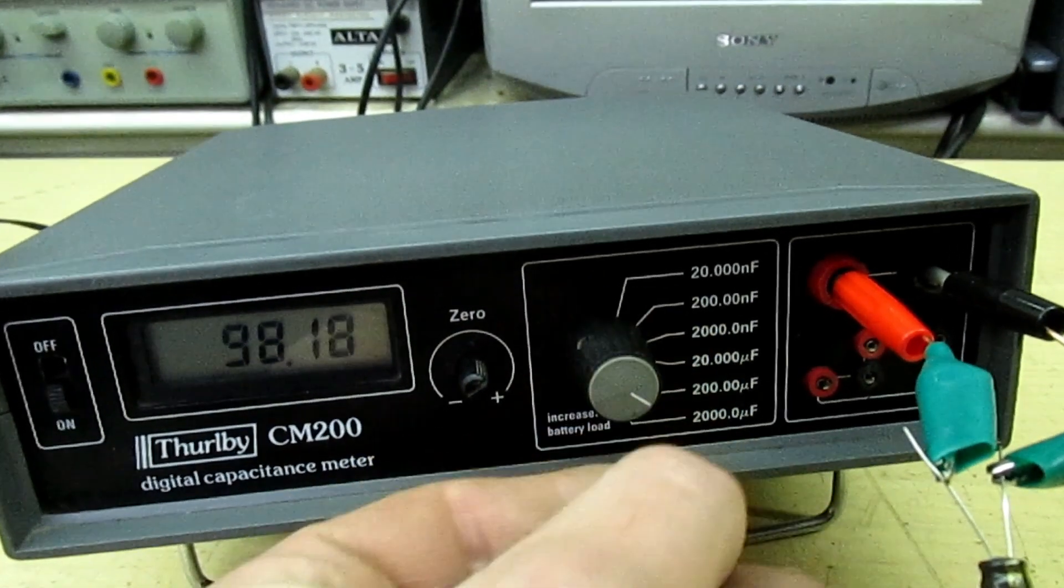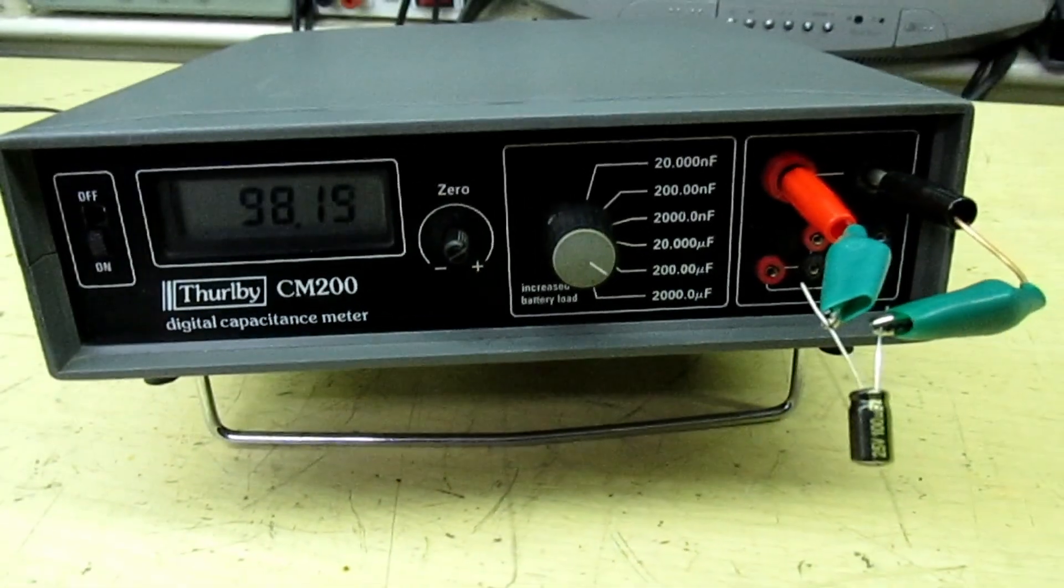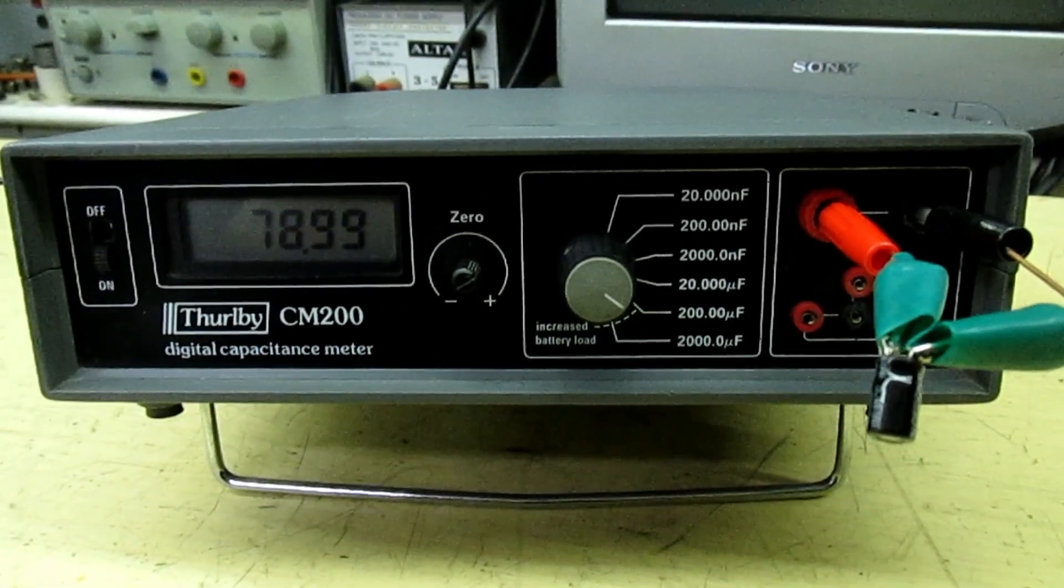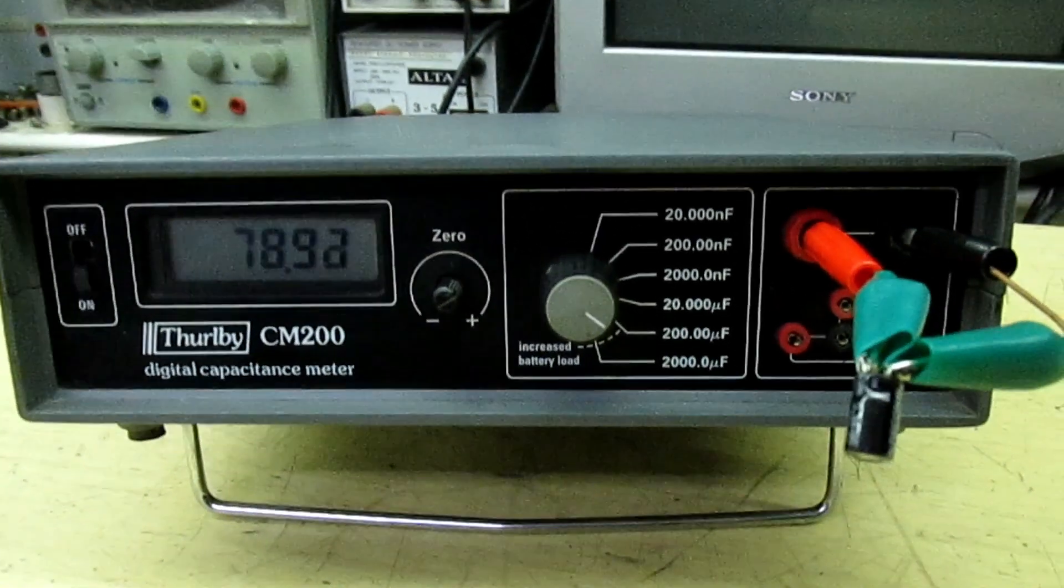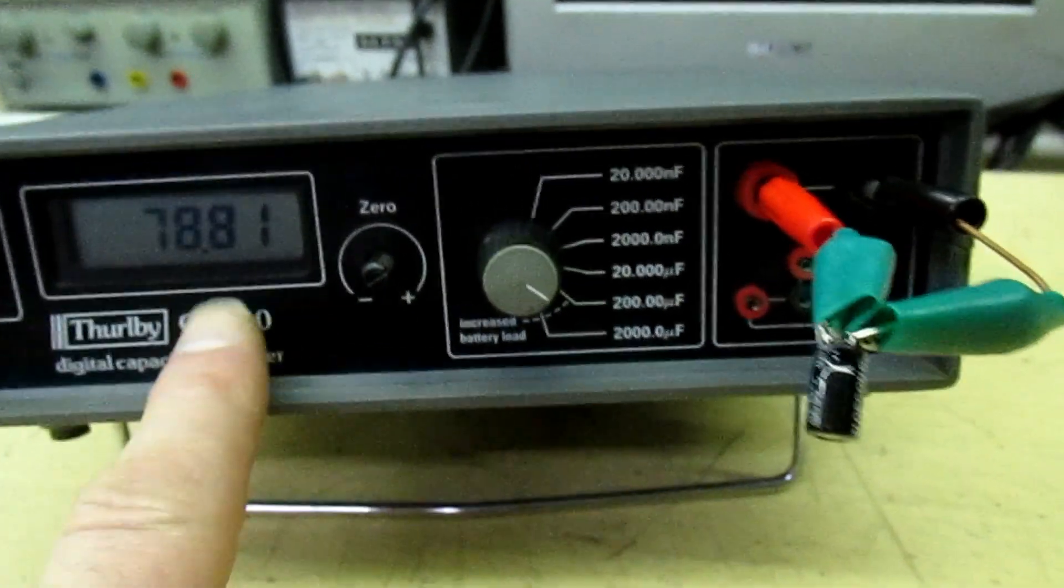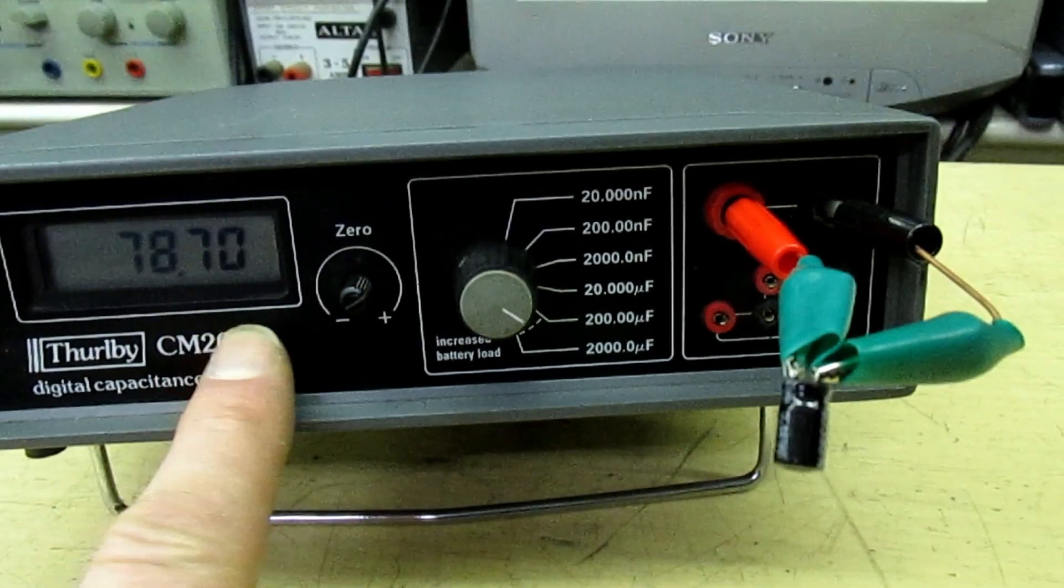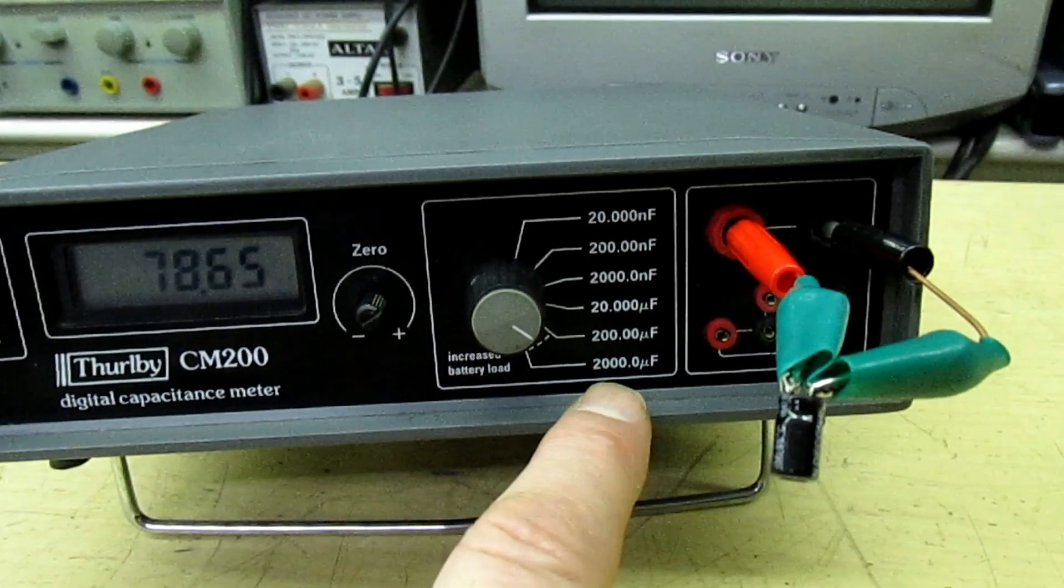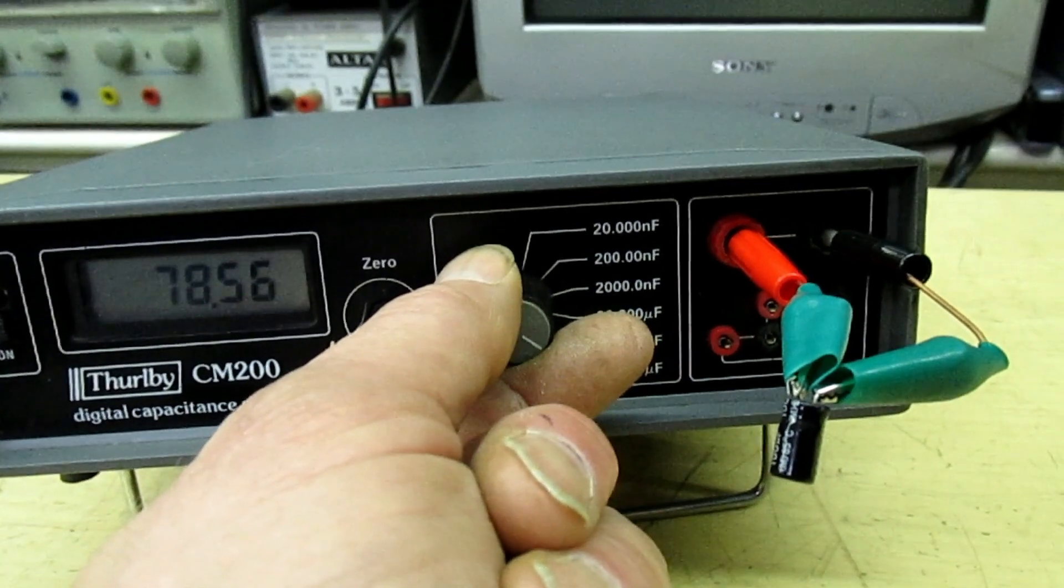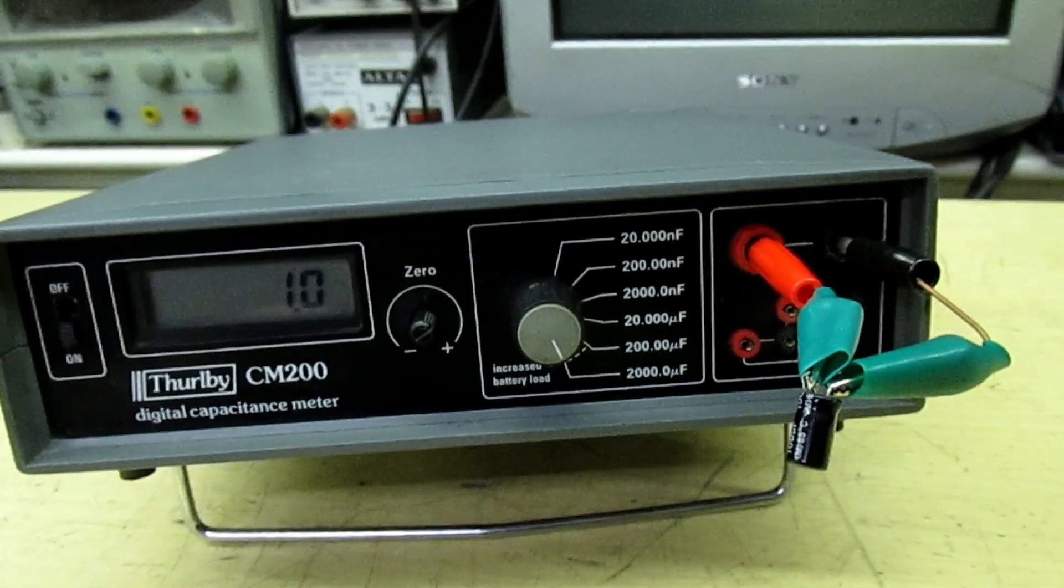Now if we swap that for the worn out capacitor, I'll demonstrate the difference operating frequency makes on a worn out cap. I've swapped the capacitor for one that's worn out, it's 100 microfarad or should be. This is running at very low frequency, it's measuring 78 microfarads. Now watch what happens to that reading when I increase the operating frequency by switching to the next range up. It's reading 78, so I'll go up in frequency, and the capacitance now has dropped to one microfarad.